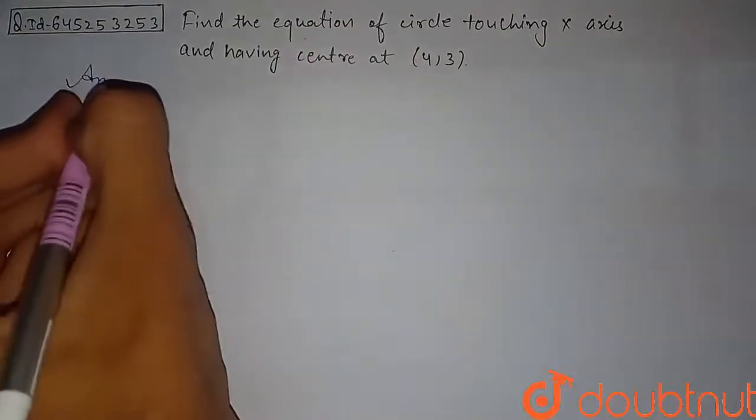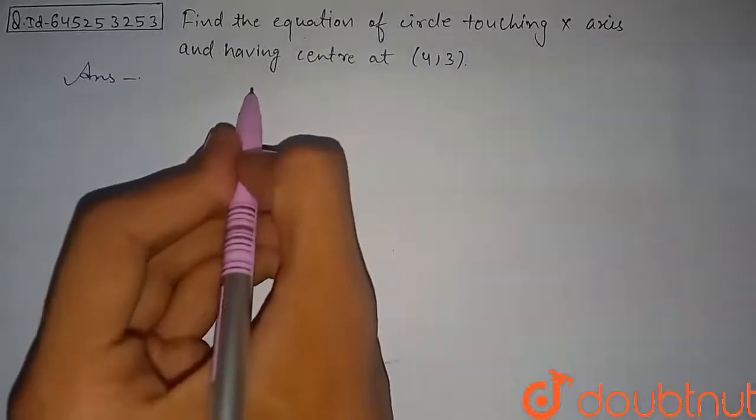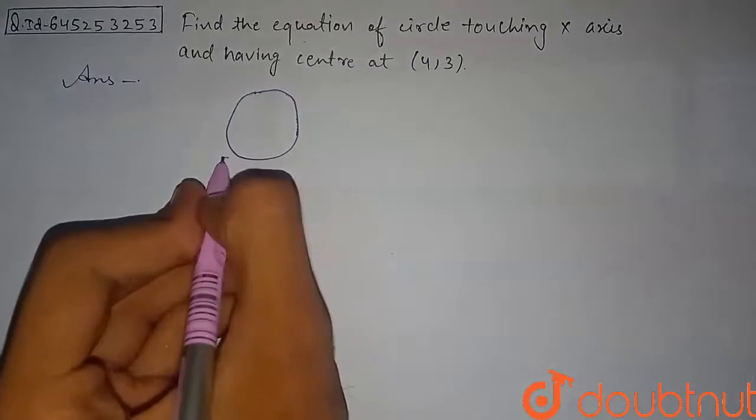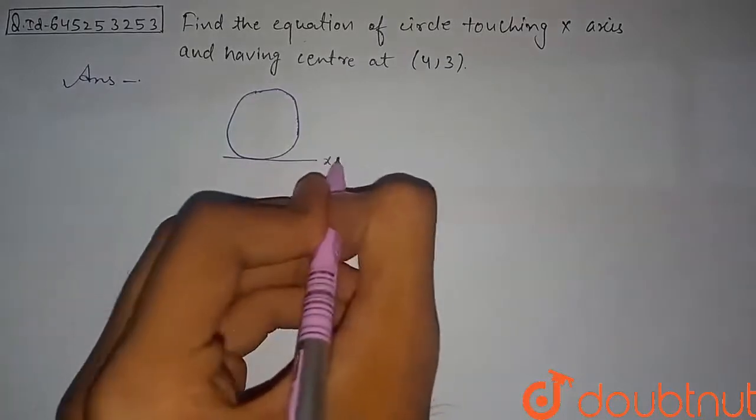So let's begin with solution of this question. If you draw the rough sketch of the circle, then let this be our circle. Since it is touching the x-axis, this will be our x-axis.